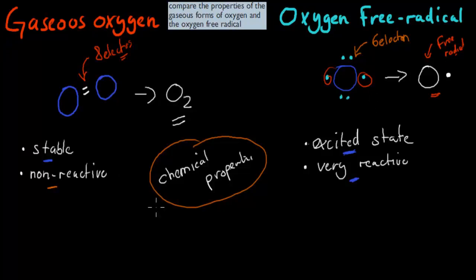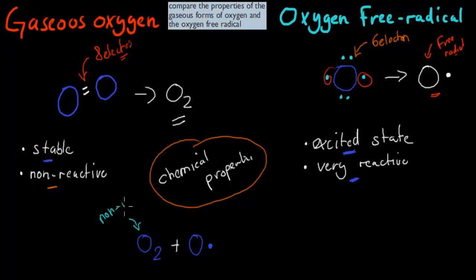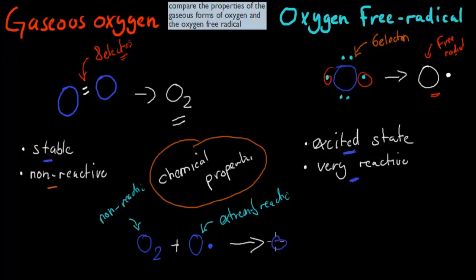One example you'll see repeatedly: if O2 comes in contact with one of these oxygen radicals, the O2 is unreactive and wouldn't usually react with anything. But because the oxygen free radical is extremely reactive, a chemical reaction will occur, and they will come together to form ozone, O3. This is one way that ozone is formed — where an unreactive oxygen molecule bumps into an extremely reactive oxygen free radical, forming ozone.